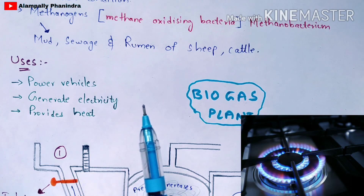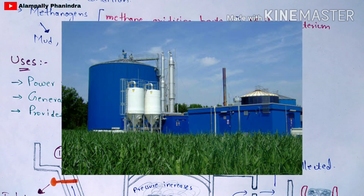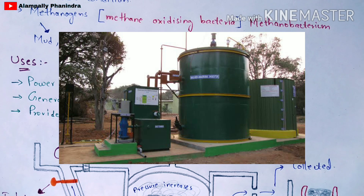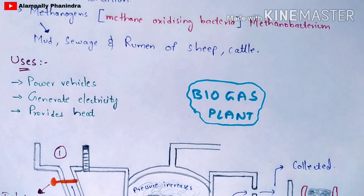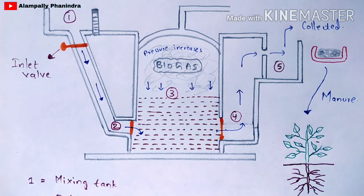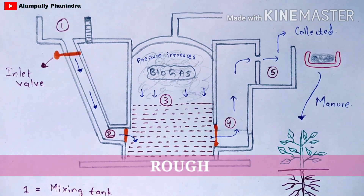The production of methane occurs in a biogas plant, as you can see in the picture. Now let us see how the production of methane occurs in this biogas plant, what the major parts are, and what procedure is involved. This is a rough diagram of the biogas plant.